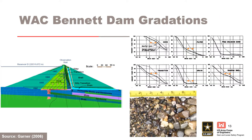BC Hydro's WAC Bennett Dam is a well-known and heavily studied case history. All materials came from moraine pits, which were deficient in medium sands, shown in red. The wide, blended, till-like core was internally unstable. The transition and filter materials were gap graded in the medium sand range. The coarse portion of the soils is shown in the photograph at the bottom right.